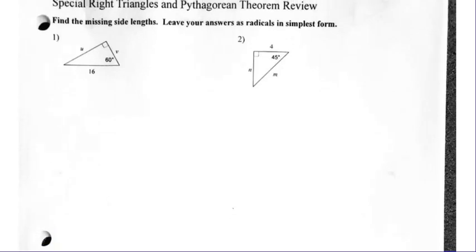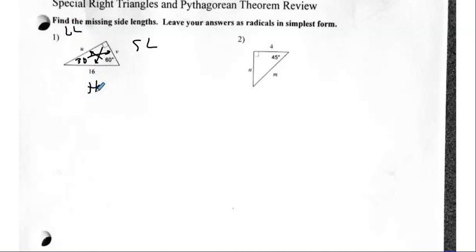It helps to label. So if you have a 60 here, remember this is 30 right there. So V is my short side, this is my long side, and that's my hypotenuse. Short leg, long leg, hypotenuse. It just helps if you keep everything labeled and on track.